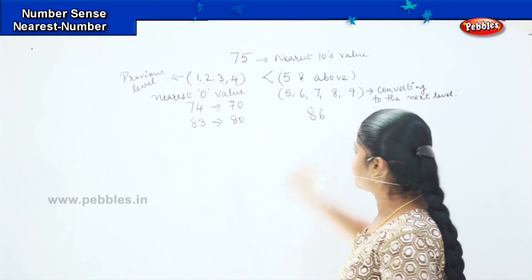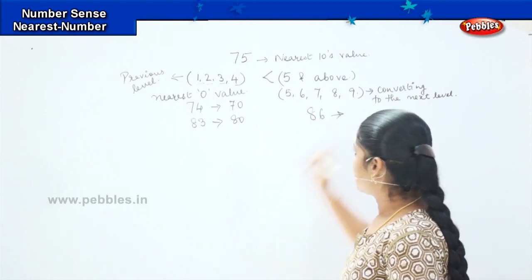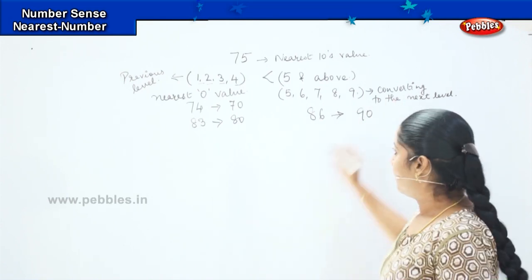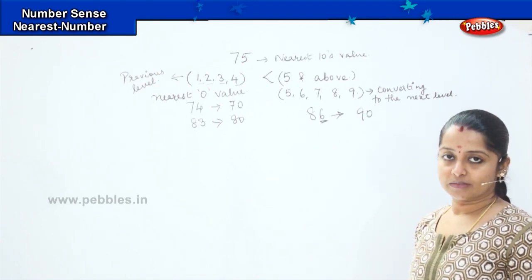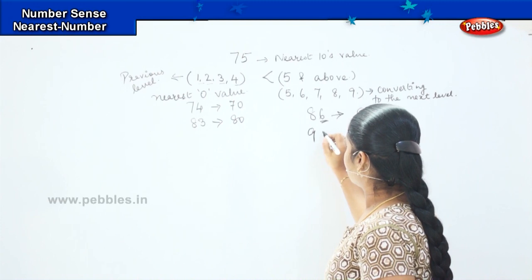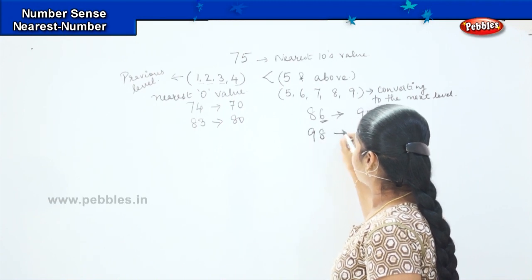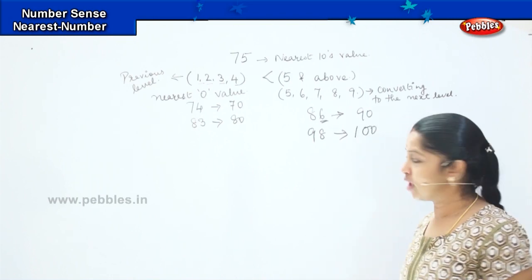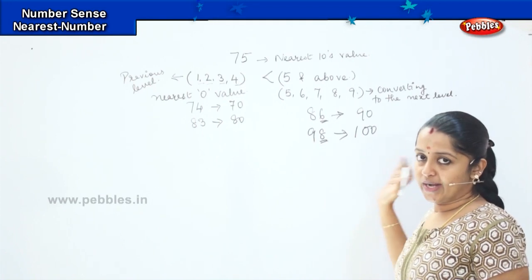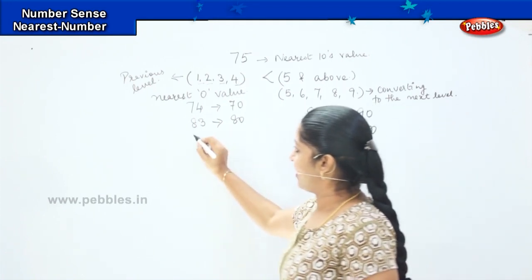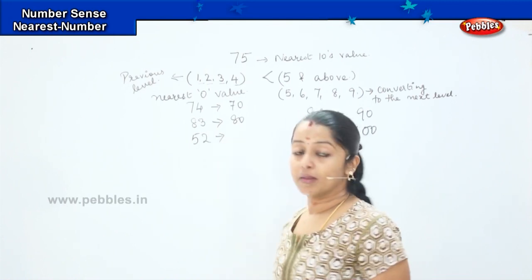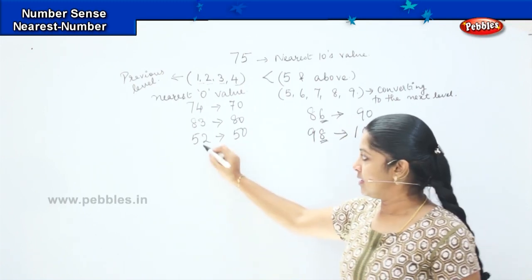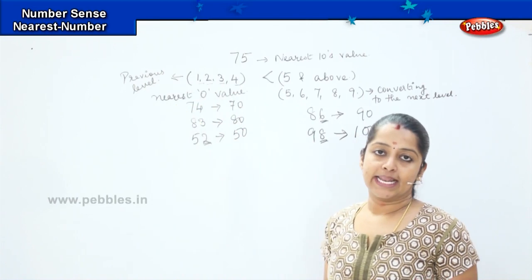For example, if I have the number 86, the nearest tens will be 90 because it ends with 6, which is 5 or above. Similarly, 98 rounds up to 100 because 8 is greater than 5. And if I have 52, the nearest tens will be 50 because 2 is a lesser value.